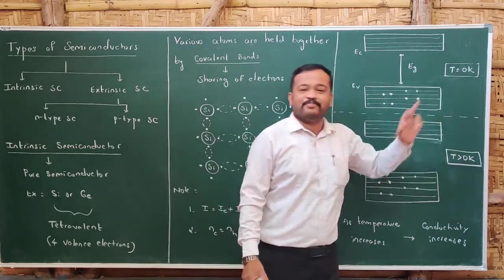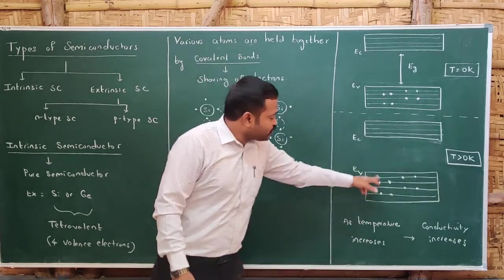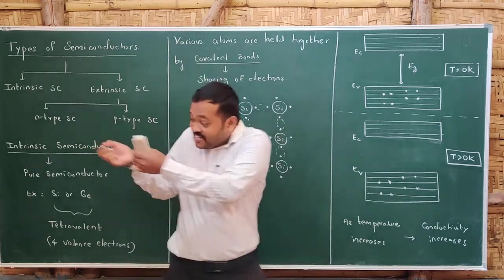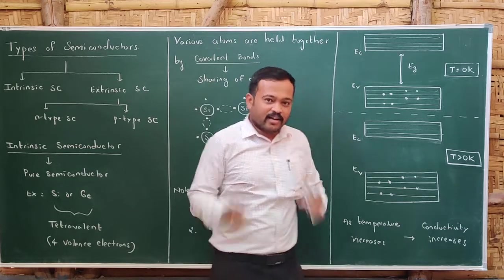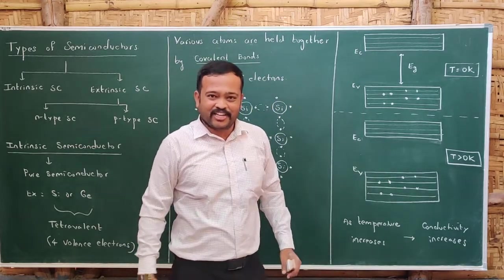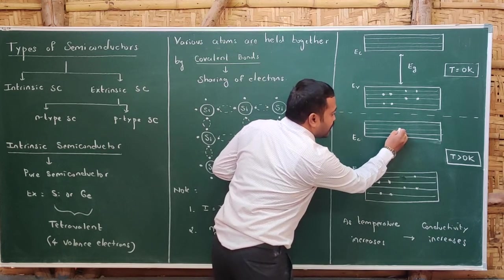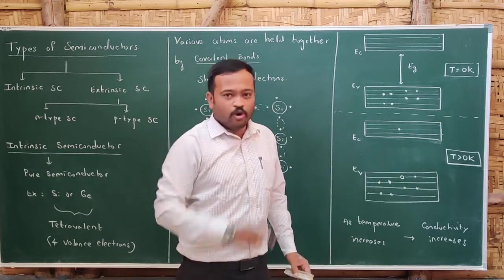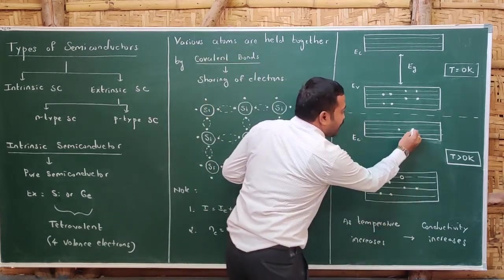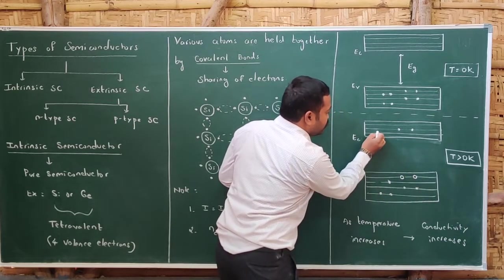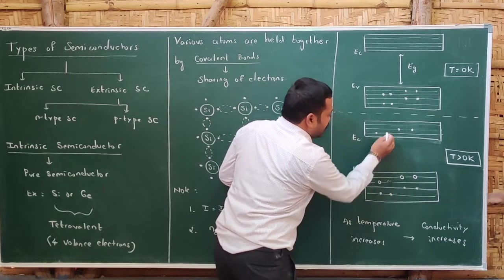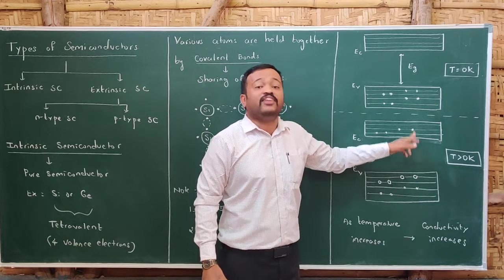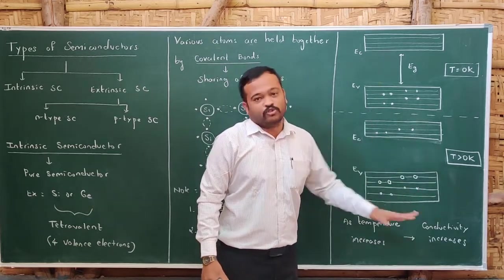What happens if you increase the temperature? If you increase the temperature, the electrons present in the valence band get sufficient thermal energy and they jump to the conduction band. When an electron jumps to the conduction band, a vacancy is created — we call that vacancy a hole. As more electrons jump, more holes are created. These are called conduction electrons or free electrons, and the vacancies left behind are the holes.